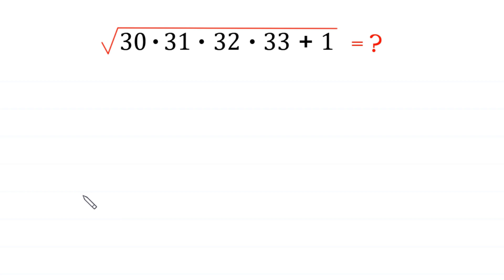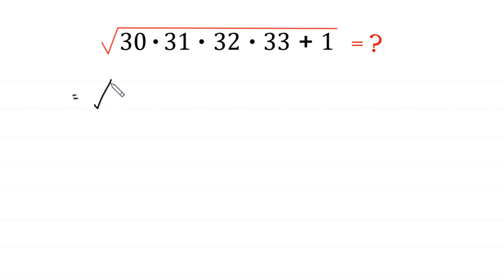Hello, welcome to how to solve this very nice square root algebra simplification problem. We have the square root of 30 times 31 times 32 times 33 plus 1. We can write this expression as a square root.